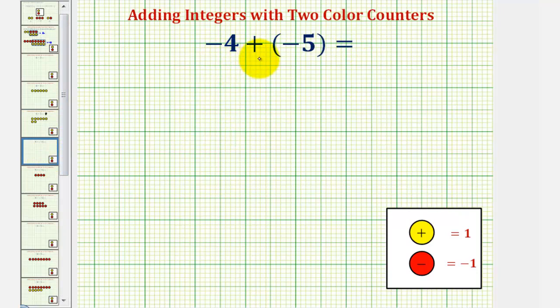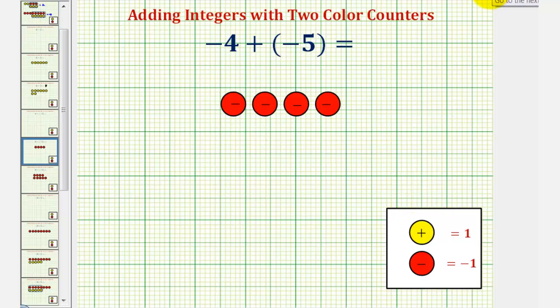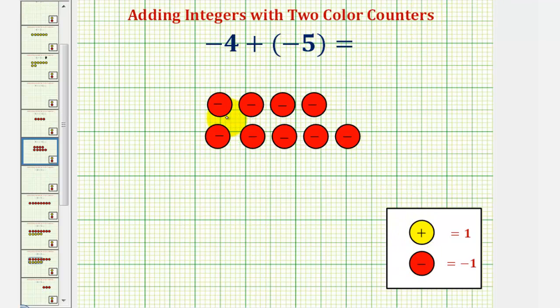Next we have negative four plus negative five. We'll begin by modeling negative four. Let's go ahead and use four red counters. And then for plus negative five, we're given five more red counters. Notice how now we have nine red counters, which results in negative nine. Negative four plus negative five equals negative nine.